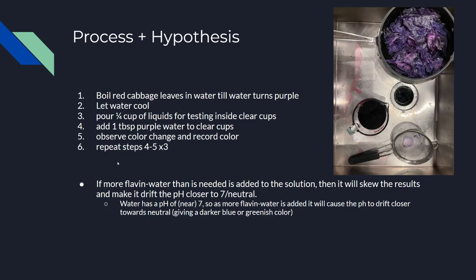My hypothesis was: if more flavin water — which is this purple water — is added to the solution, then it will skew the results and make it drift the pH closer to seven, or neutral. Because water usually has a pH of near seven, as more flavin water is added, it will cause the pH to drift closer towards neutral, giving a darker blue or greenish color.